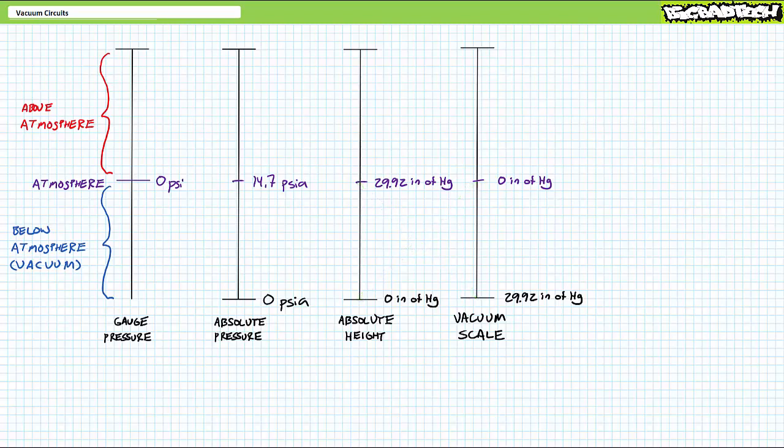I should note, if you live in a country with a working government and a functional healthcare system, most likely the vacuum scale is specified in millimeters instead of inches, where 0 millimeters of mercury is atmospheric conditions, and 760 millimeters of mercury is a perfect vacuum.